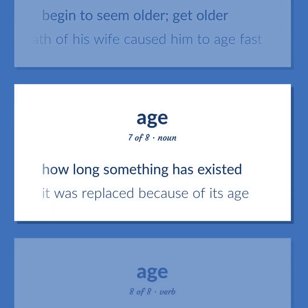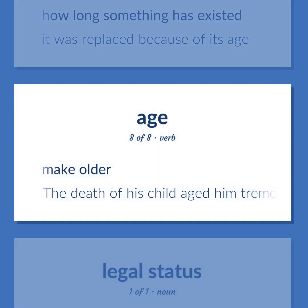How long something has existed. Example: It was replaced because of its age. Make older. Example: The death of his child aged him tremendously.